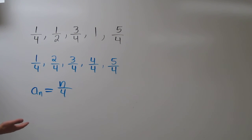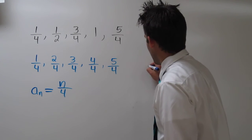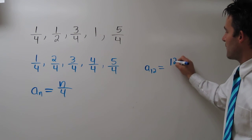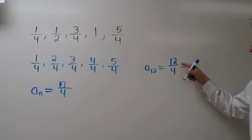So what would the 12th term of this sequence be? Well, a sub 12 would be 12 over 4, which when we divide 12 by 4, we just get 3.